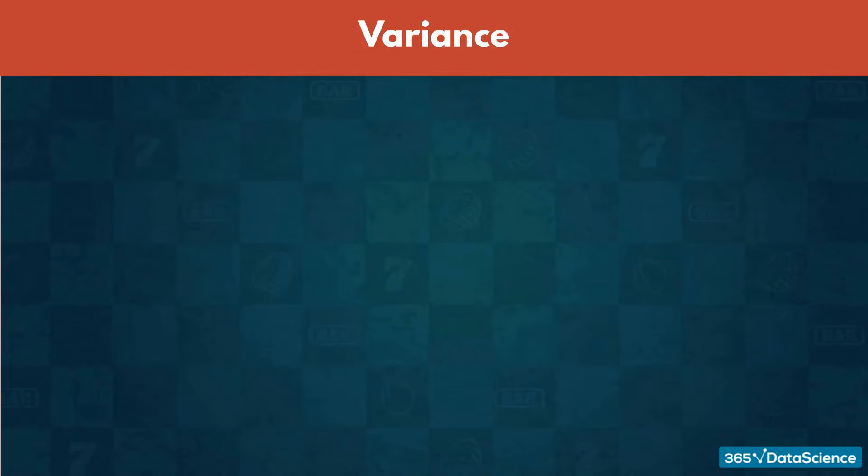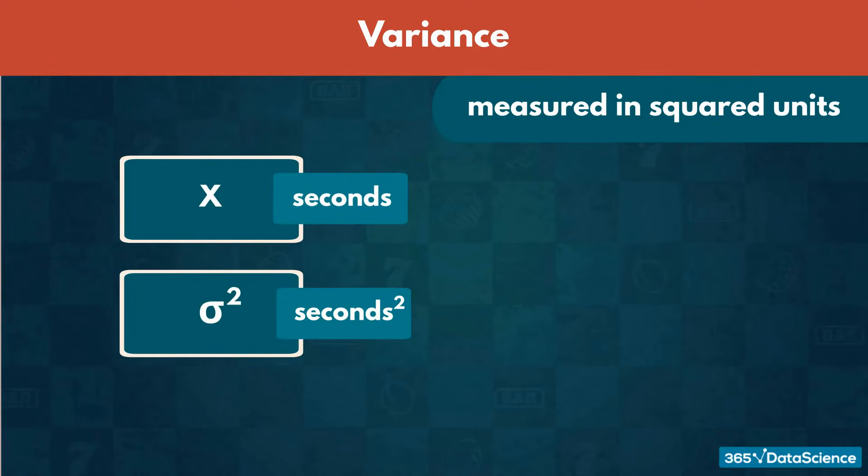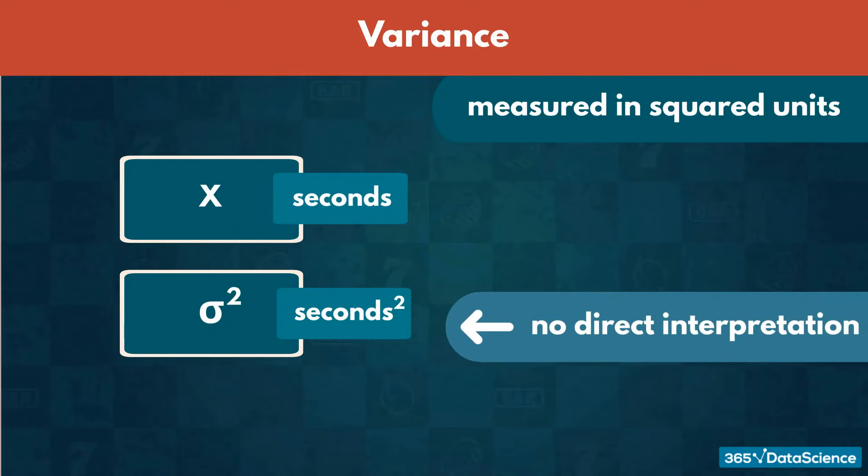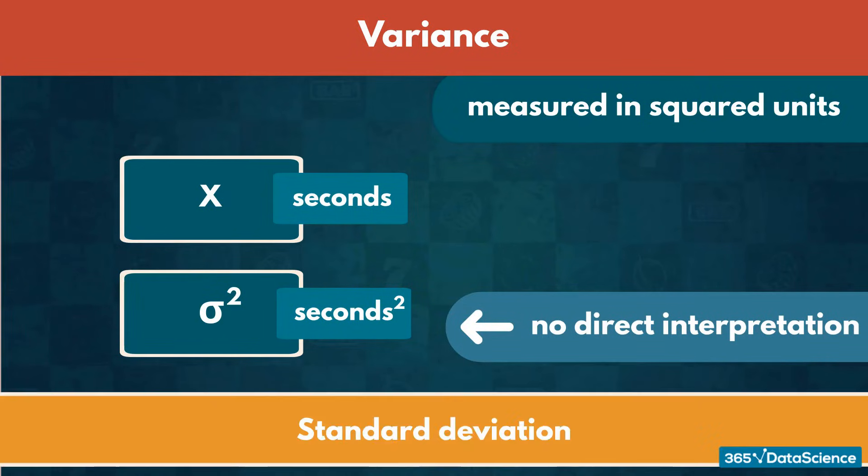One flaw of variance is that it is measured in squared units. For example, if you are measuring time in seconds, the variance would be measured in seconds squared. Usually there is no direct interpretation of that value. To make further sense of variance, we introduce a third characteristic of the distribution, called standard deviation.